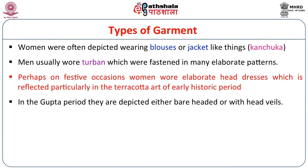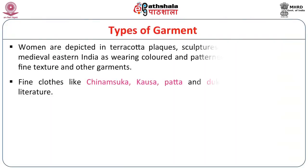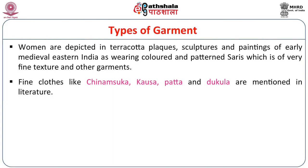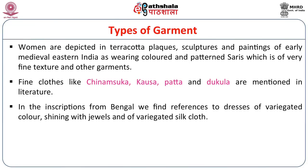In the Gupta period, women are depicted either bareheaded or with head veils. In the terracotta plaques, sculptures and paintings of early medieval eastern India, we find colored patterns of saris and very fine texture. When you look at a sculptural piece, the motifs become very evident and the drapery is completely diaphanous, so that you can see the body — which means it is a very fine cloth. Therefore fine cloths like chinangshuka, kosha, patta and dhukula are mentioned in literature, and literature and sculpture go hand in hand. In the inscriptions from Bengal, we find references to dresses of variegated colours shining with jewels and a variegated slick silk cloth.